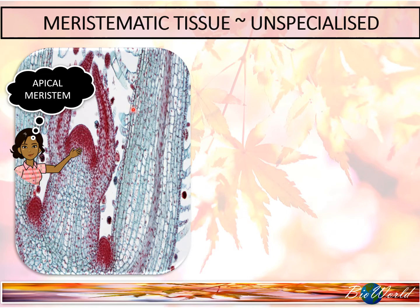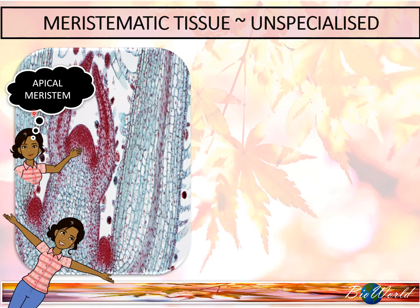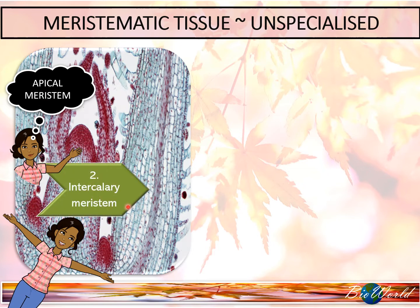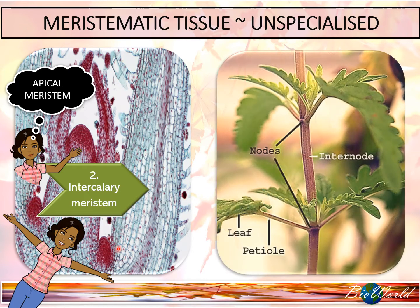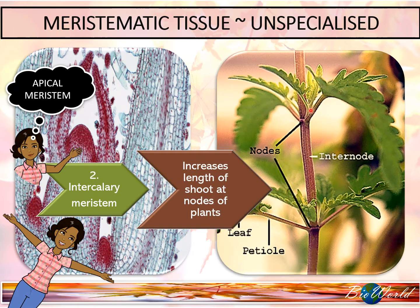If you have been observant of the microscope image of the shoot tip, you would notice that there are another two positions that look similar to the apical meristem. These two meristems are the second meristematic tissue, known as the intercalary meristem. These meristems are located at the nodes of plants and are necessary to enable elongation of the shoot in between the nodes.